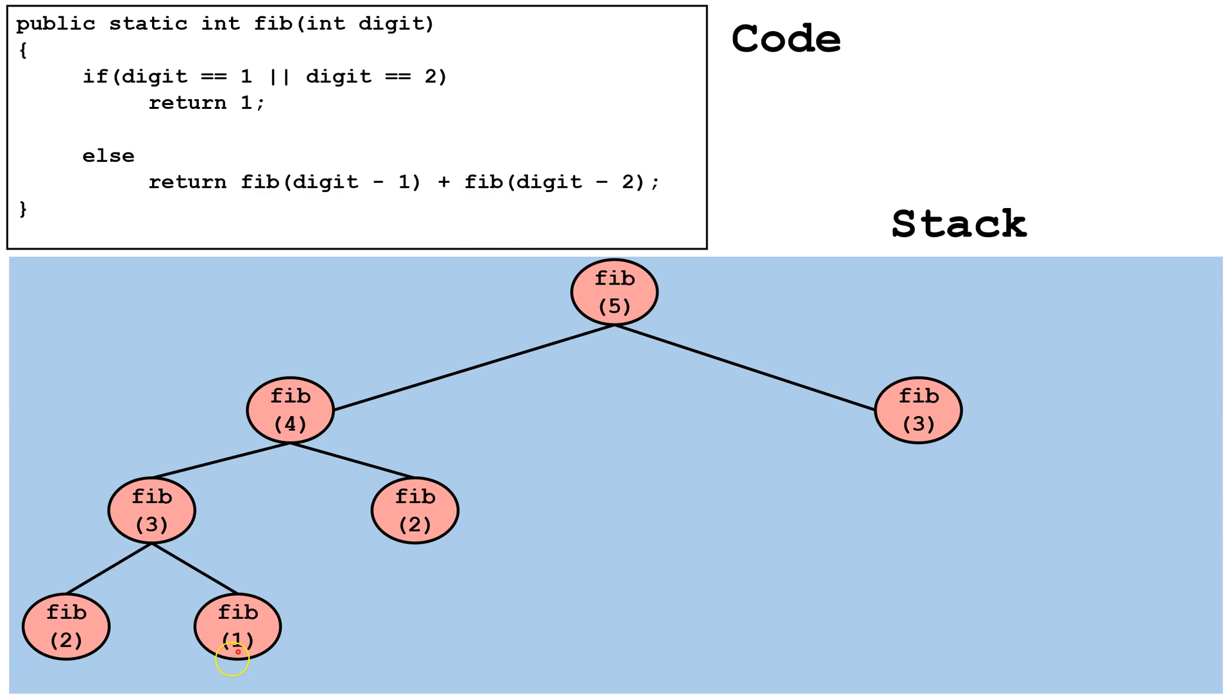Now we've hit two base cases. We know Fib, if we pass it the value 2, is going to return 1. And we know if you pass Fib the value 1, it's going to return 1.